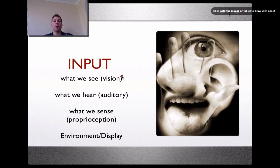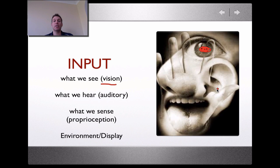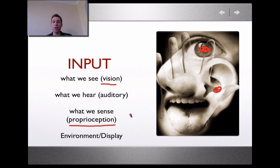Our input has three key areas. What we see — that's our vision, and obviously our eyes pick that up. What we hear — also termed auditory or audition, picked up by our ears. And what we sense — this proprioception or proprioceptors that detect the way we feel in a situation, also referred to as kinesthesis. What you sense of your muscle and limb movements and where you are in your surroundings is key. It's about what's in your environment, also termed your display.